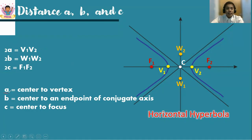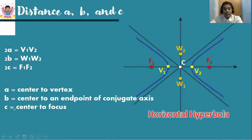Therefore, distance a is from the center to one of the vertices; distance b is from the center to one of the endpoints of the conjugate axis; and distance c is from the center to a focus. Distance a is also called the semi-transverse axis, and b is the semi-conjugate axis. Notice that c is the longest distance — c is greater than a and c is greater than b — similar to how we treat a, b, and c in a right triangle.